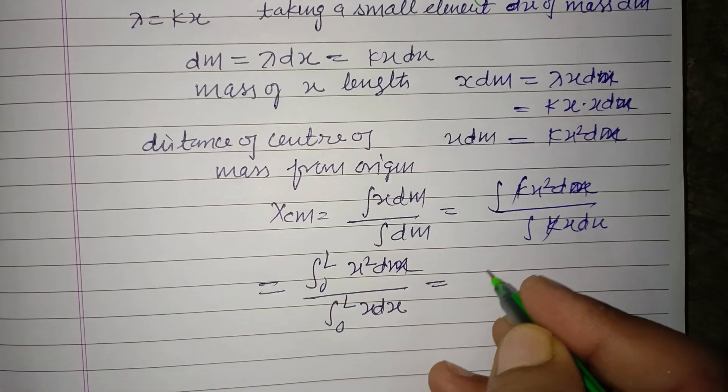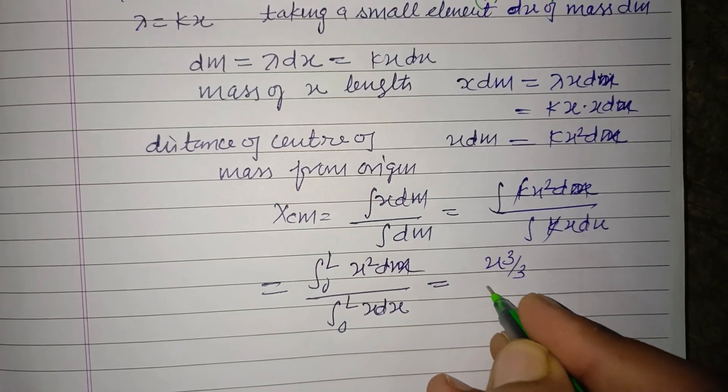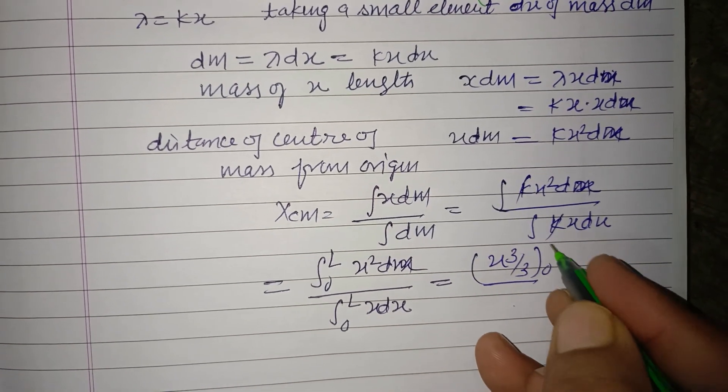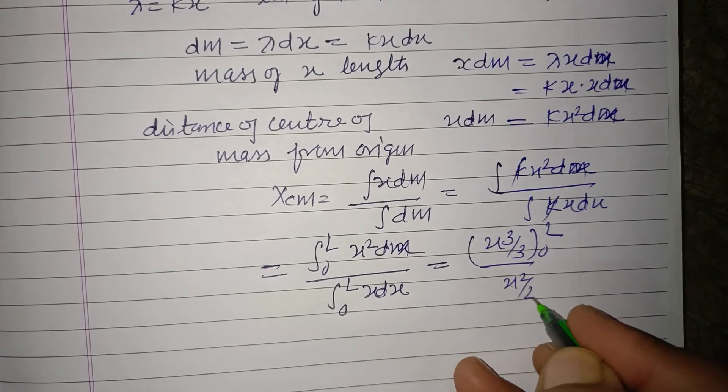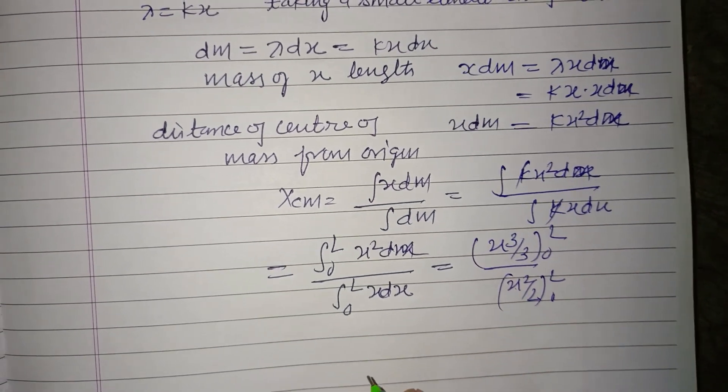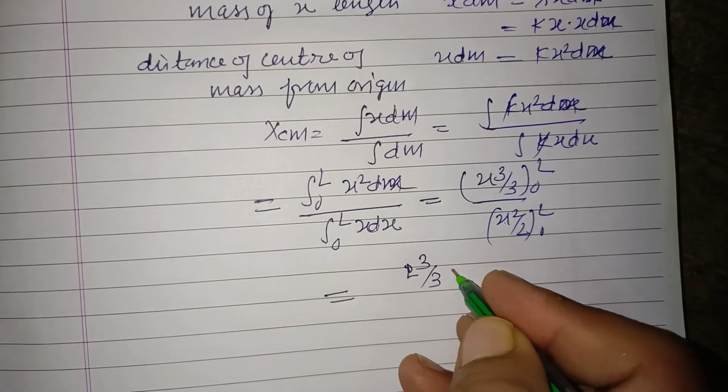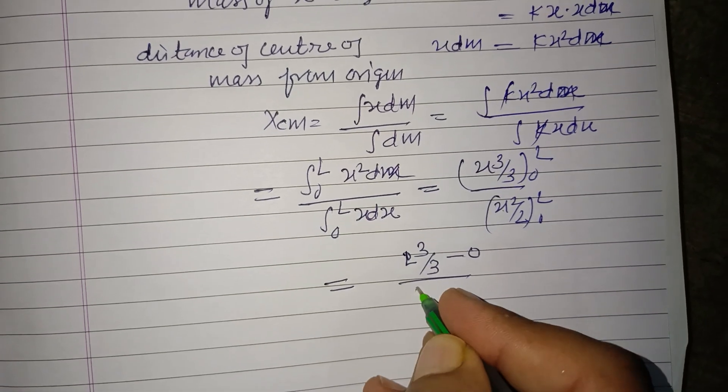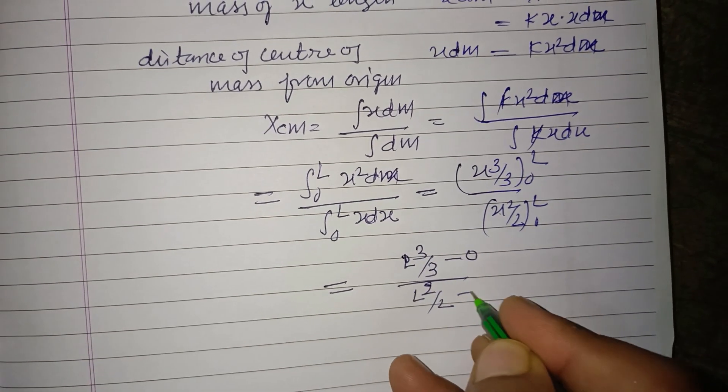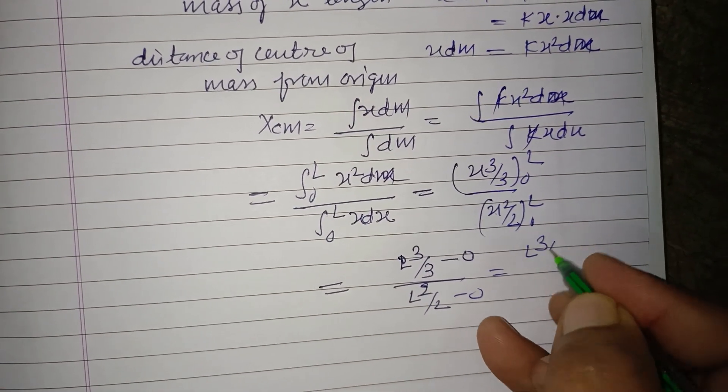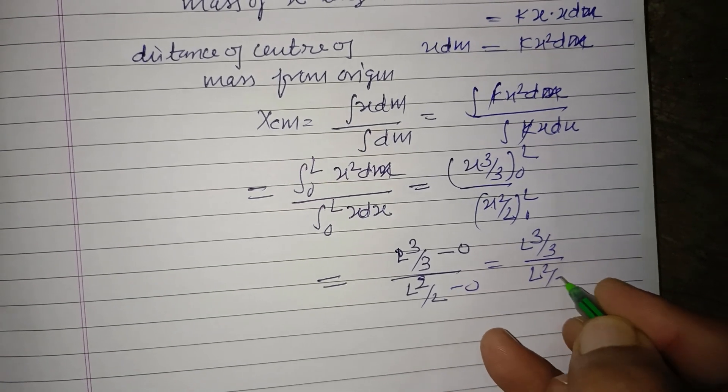So x cubed by 3, limit 0 to L, and this is x squared by 2, limit 0 to L. Now applying limit, L cubed by 3 minus 0 over L squared by 2 minus 0, so this is L cubed by 3, L squared by 2.